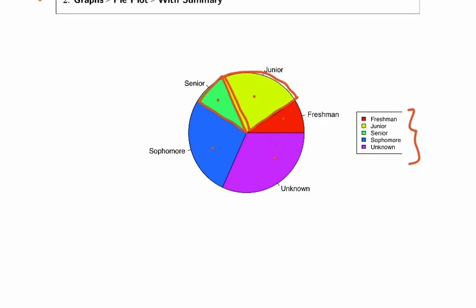To summarize when we're dealing with categorical data, we have two options to display the data on a graph, either using a bar graph or a pie chart.